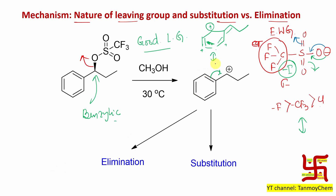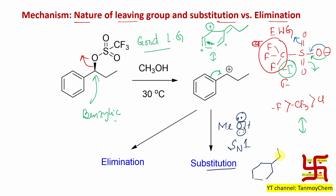This carbocation has two options. One: it can react with methanol via nucleophilic substitution — an SN1 pathway — because the carbocation is produced in the first step, then methanol attacks in the second step. The final product after elimination of the proton will have an –OMe group at that carbon.